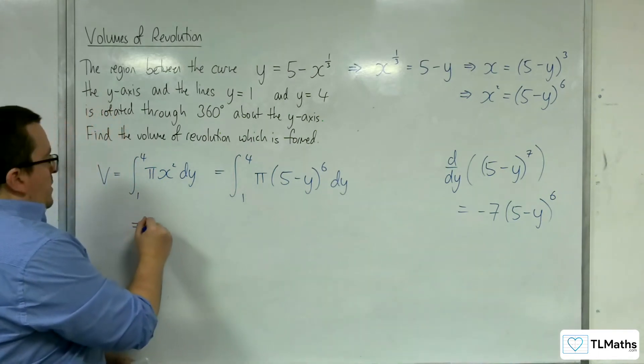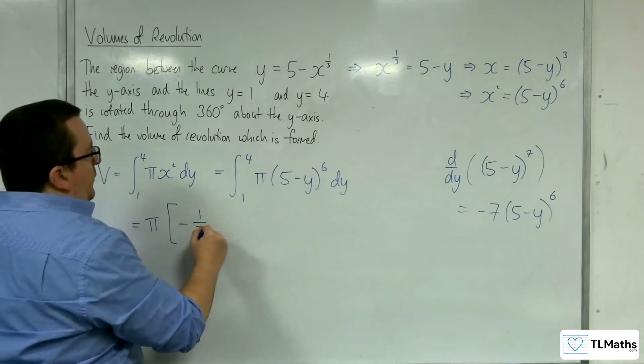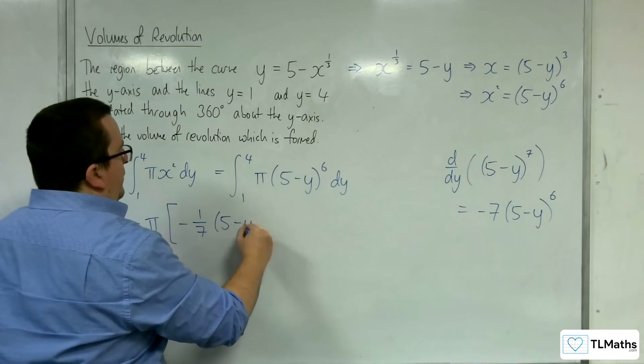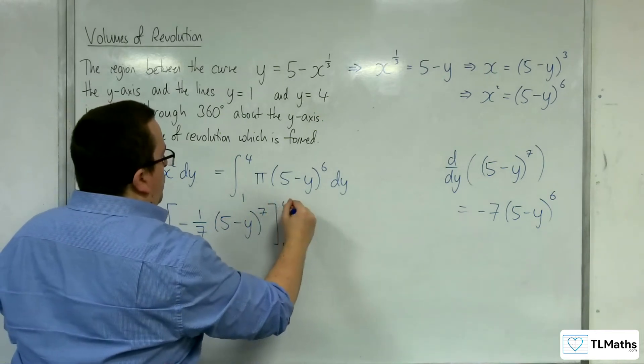So I'm going to bring the pi outside of the integral, and I'm going to have minus 1 seventh, 5 minus y to the power of 7, evaluated between 1 and 4.